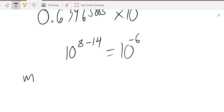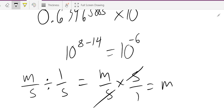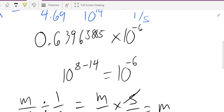So, meters per seconds divided by 1 over seconds, which is equal to meters per second times second over 1. So, seconds cross out, and I get meters. You see this? Do you see how I did that math there? It's a little math trick. Now, what I have here is I have 0.63965885 times 10 to the negative 6th meters.